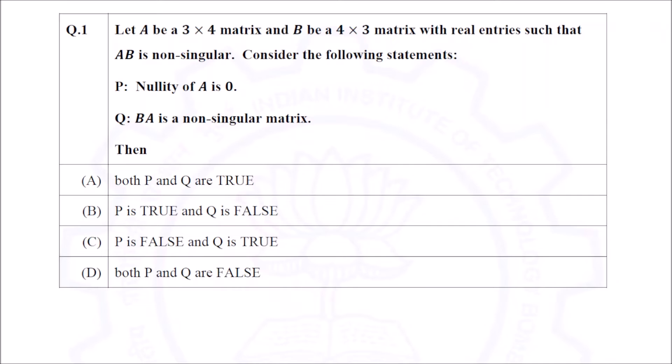It is given that A is a 3×4 matrix and B is a 4×3 matrix such that AB is non-singular, meaning the determinant of AB is non-zero.